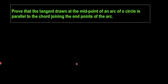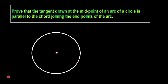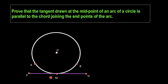Let us draw our figure first. We need a circle with center O. Let AB be the arc. We need the midpoint of the arc so that a tangent is drawn at the midpoint — let it be M — and the tangent be PQ, passing through point M, where M is the point of contact of the tangent and the circle. Next, let AB be the chord.